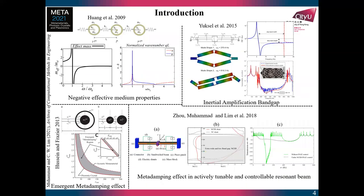Further discovery in acoustic metamaterials led to peculiar mechanical effects, including negative effective medium properties like negative effective mass density, first reported by Professor Goolung-Hank, inertial amplification band gaps for broadband vibration and noise control, emergent metadamping in acoustic metamaterials, and active control techniques to tune and widen the band gap — recently performed by our research group.